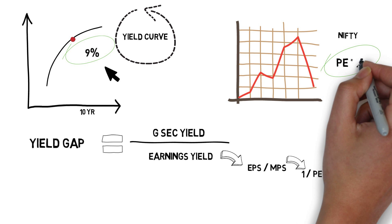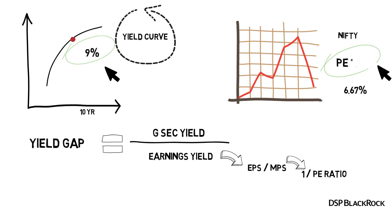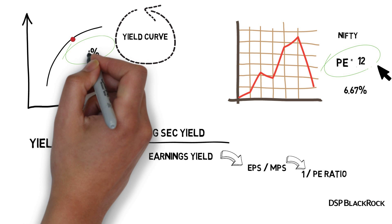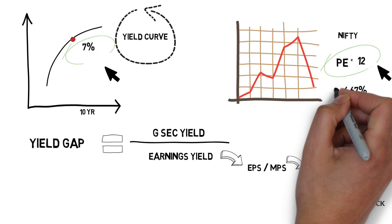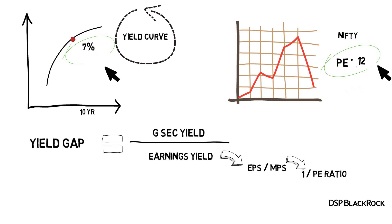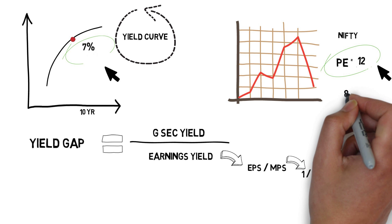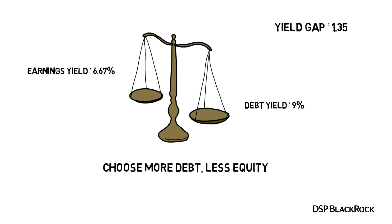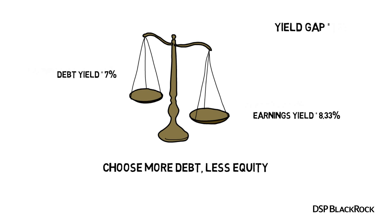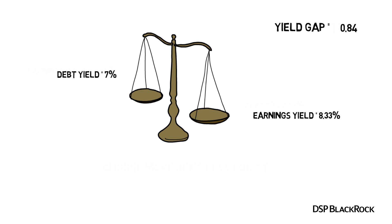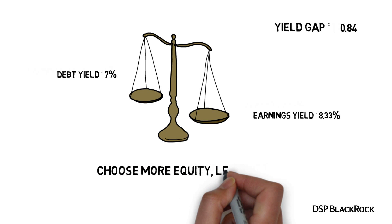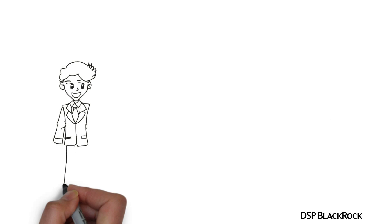Let's look at another scenario. Suppose the P/E ratio is 12 and the gsec yield is 7%. The P/E of 12 means an earnings yield of 1 divided by 12, which is 8.33%. The yield gap becomes 7 divided by 8.33, which is 0.84 — less than 1. In this scenario, we allocate more to equity and less to debt.